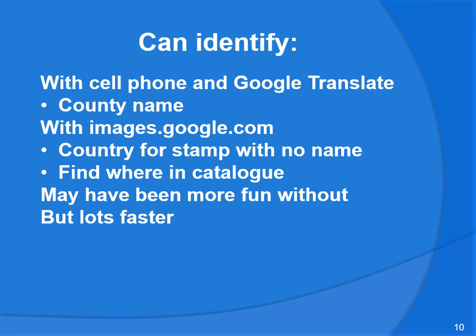So what can we do? How can we now identify stamps with the computer? With your cell phone and Google Translate, you can translate a country name if it's in Cyrillic, Arabic, Chinese, or Japanese script, and then look it up in the catalog. With images.google.com you can go even further — finding the country for a stamp with no name, or locating a stamp you can't find in the catalog even when you know the country. With a little luck you'll find exactly where it is. It may have been more fun to do this without computerized scanning, but it sure is a lot faster. Thanks for listening.